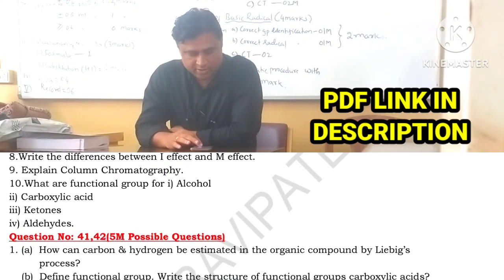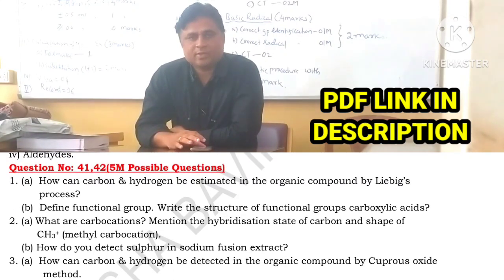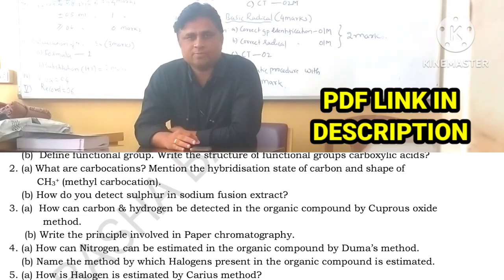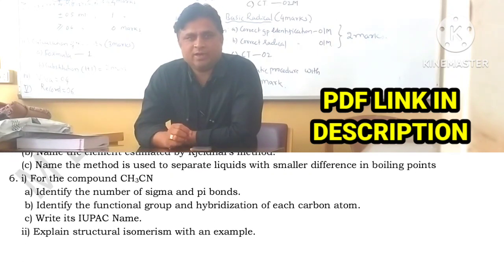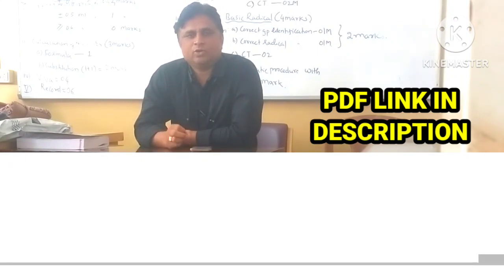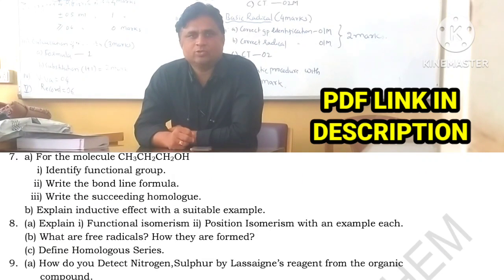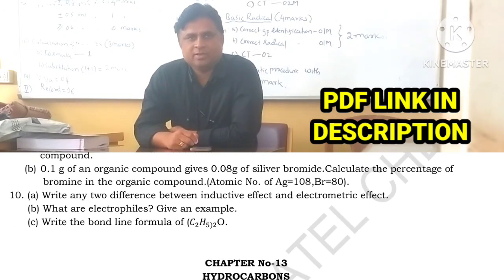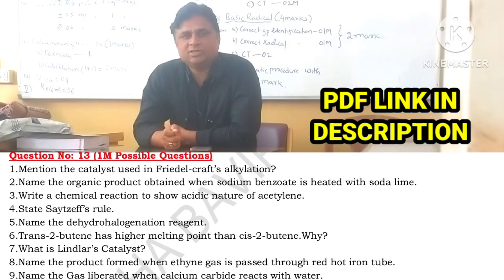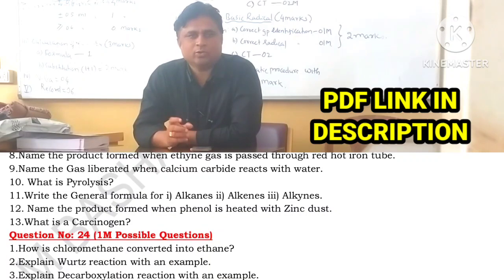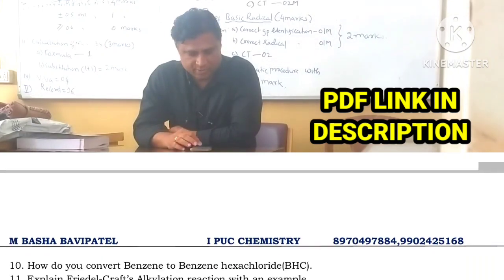We are going to discuss about seven questions in examination covering four to five marks. Now, estimation and purification of organic compounds. We are going to concentrate on carbon and hydrogen by the Liebig method, estimation of nitrogen by Dumas method, estimation of nitrogen by Kjeldahl method, and estimation of halogens, sulfur and phosphorus by Carius method. In these questions, we are going to discuss compulsory four mark questions. You have to concentrate on the principle as well as the calculation part with respect to these questions.